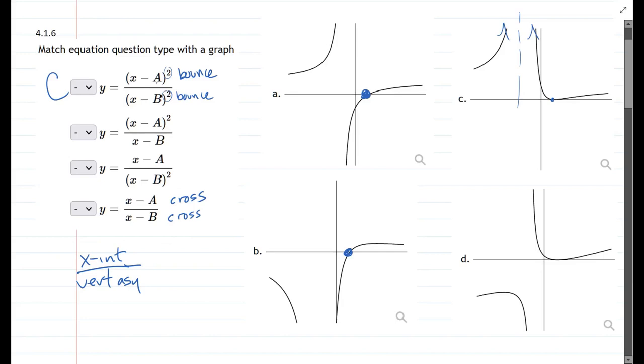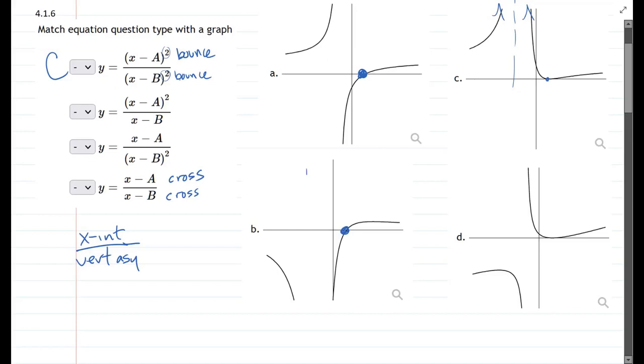So it's either A or B. Now, what's the difference? The vertical asymptote. So I'm going to draw the vertical asymptote in here.